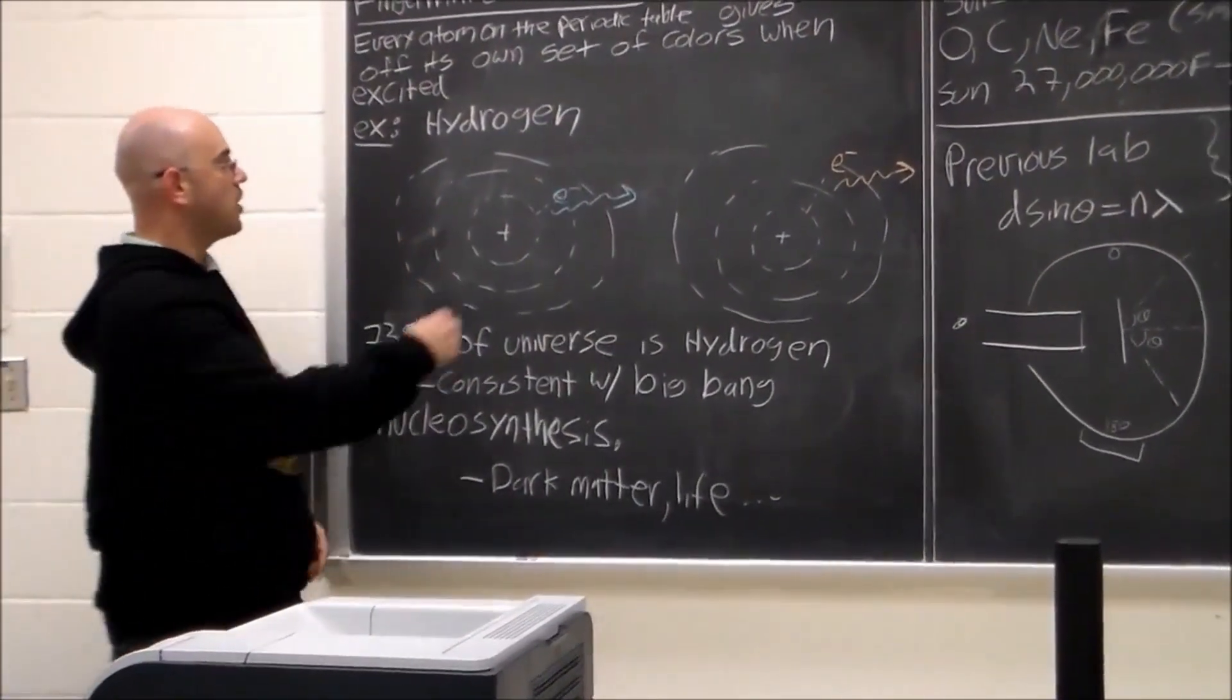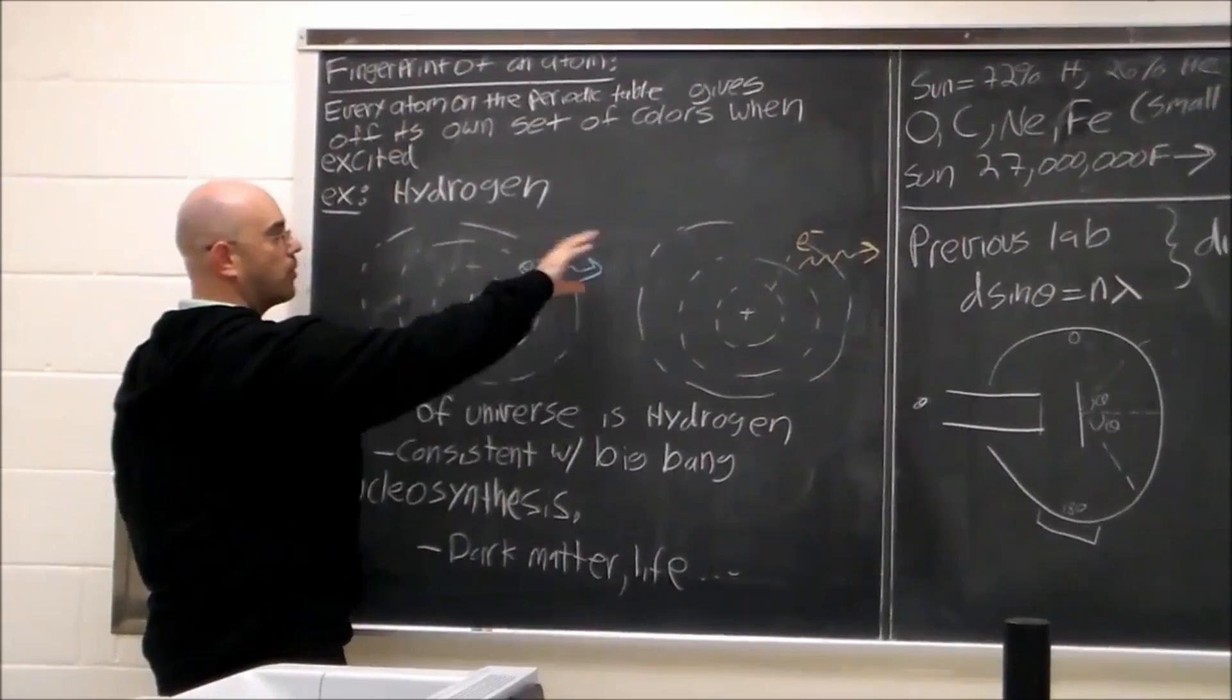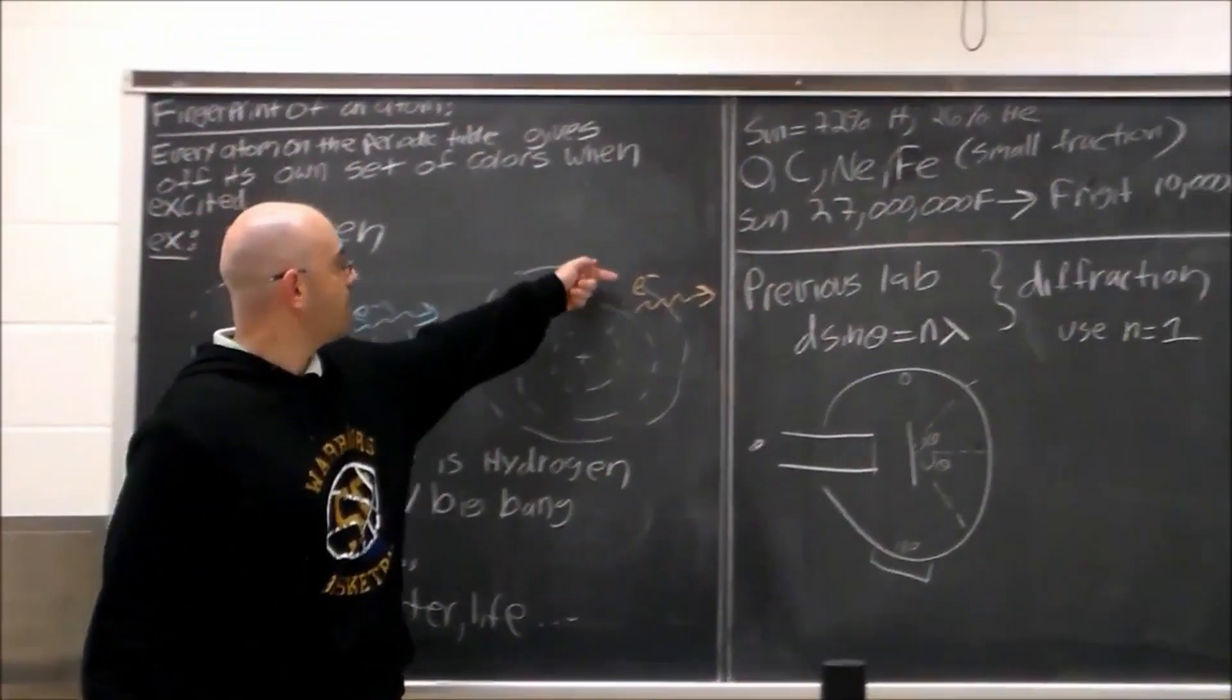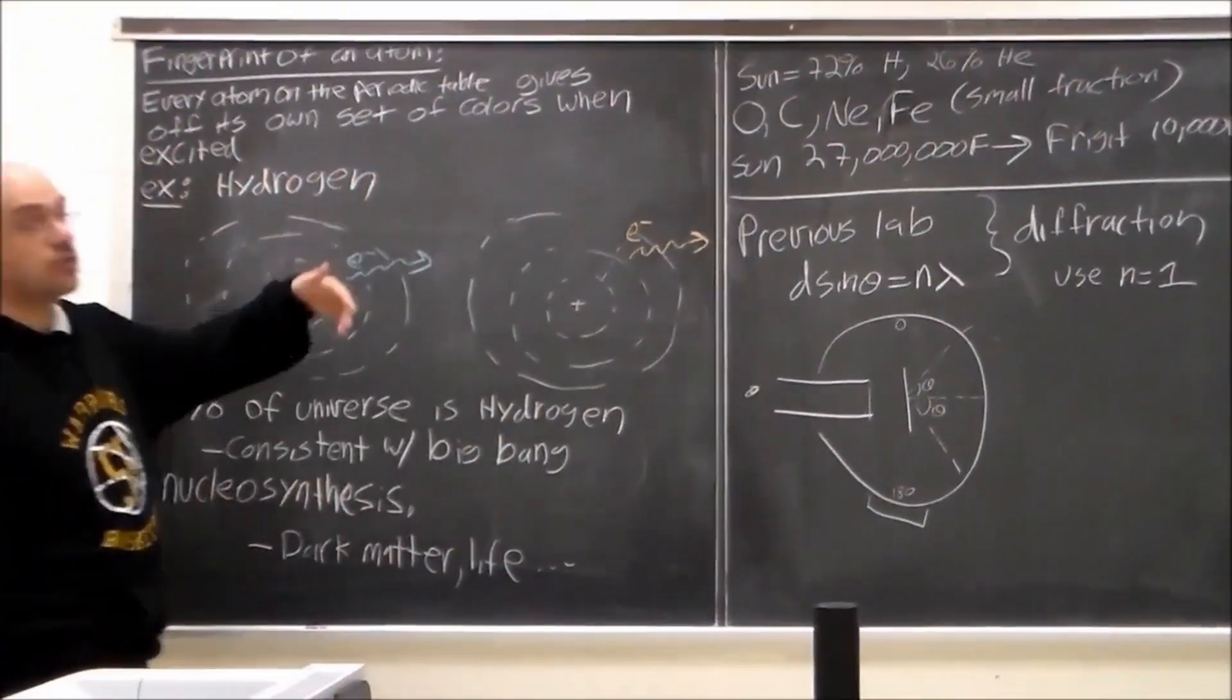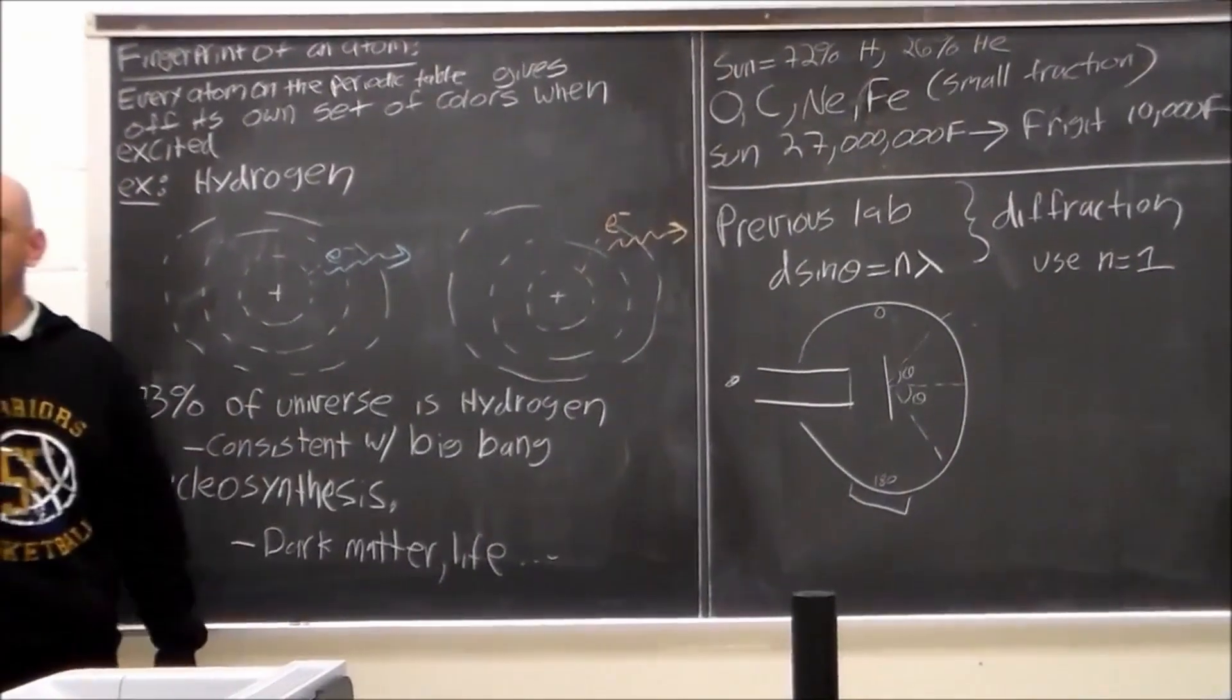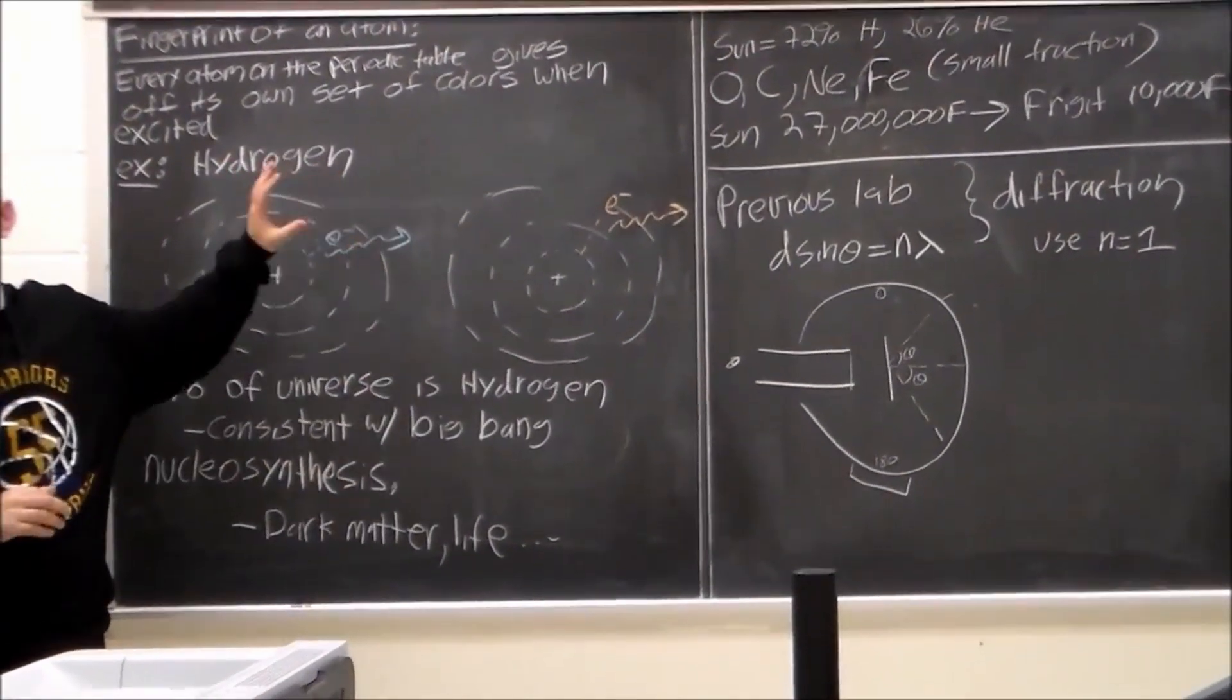If it goes from the second orbital to the first orbital, it gives off one color of light and if it goes from the third orbital to the first orbital, it gives off another color of light. So this is for hydrogen.